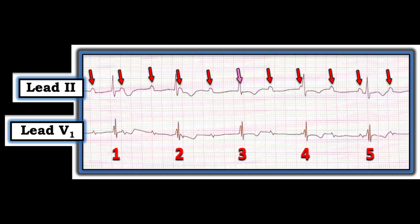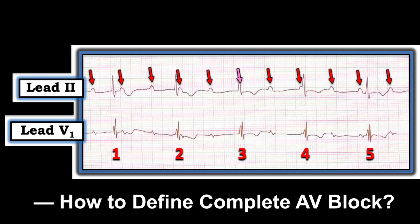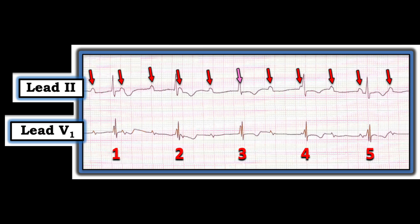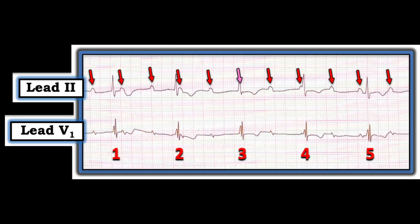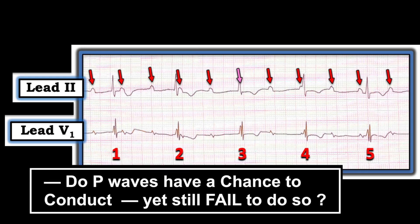P waves are marching through at a regular rate through the QRS complex with no relation — so third-degree AV block: regular atrial rhythm, or fairly regular atrial rhythm if there's underlying sinus arrhythmia, regular ventricular rhythm, and no relation between them. There is one last part of the definition of complete AV block that most providers, even experienced ones, forget: in order to call something complete AV block, you need P waves occurring at all phases of the R-to-R interval that have a chance to conduct but still fail to do so.